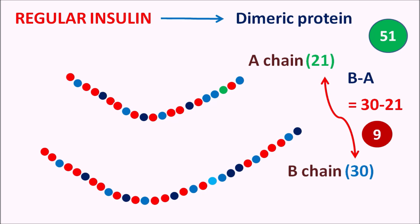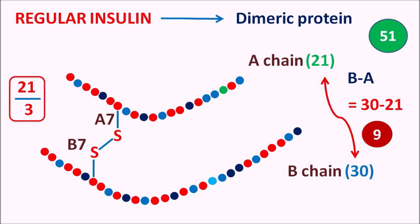These chains are connected by disulfide bridges. One disulfide bridge is present at the 7th position of the A chain and the 7th position of the B chain — both connected by a disulfide bridge. This can be remembered as 21 divided by 3 equals 7, so one disulfide bridge is at A7 and B7.